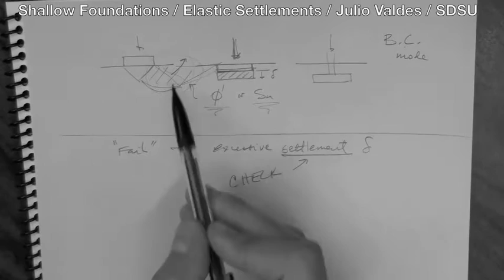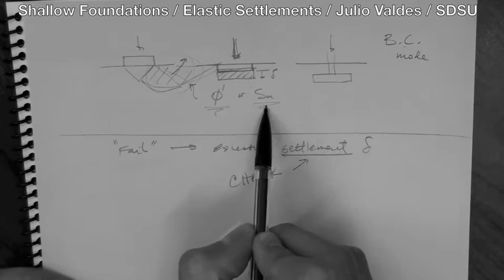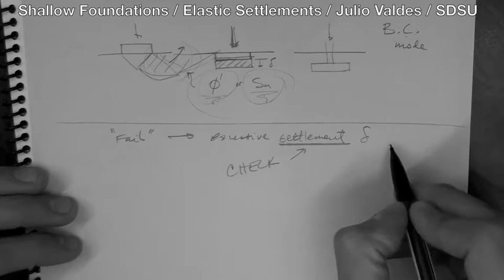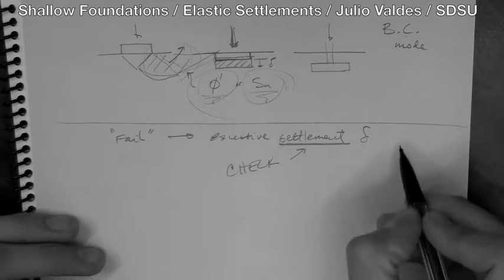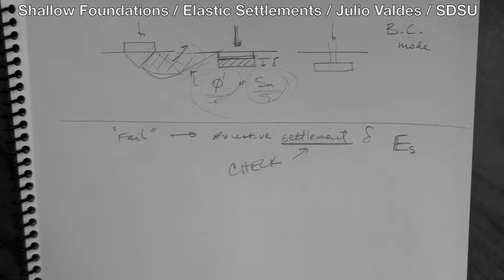For the bearing capacity mode of failure, the relevant parameters are clearly phi for drained and Su for undrained — the actual strength. For settlement, the relevant parameter is, just like in structural engineering where for deformation you care about the modulus not the yield stress, for soil we have the modulus ES, where S stands for soil. That's the relevant parameter used to determine settlement of a footing.